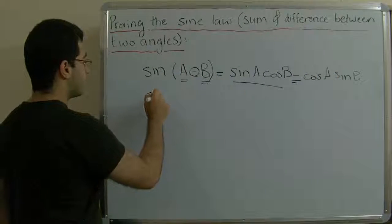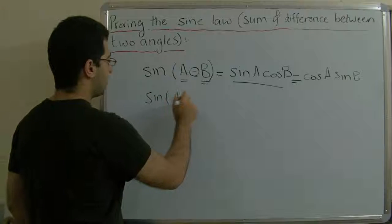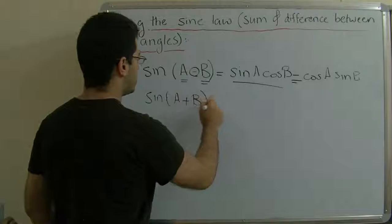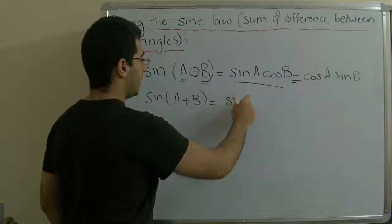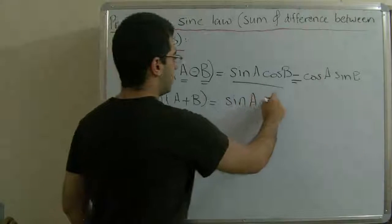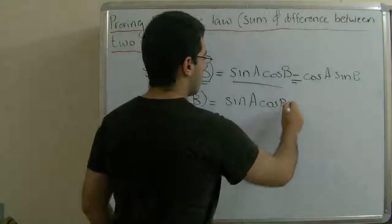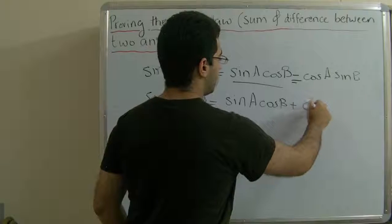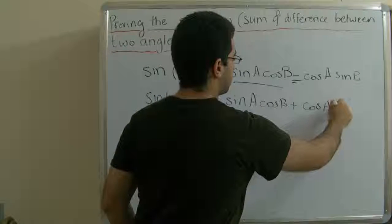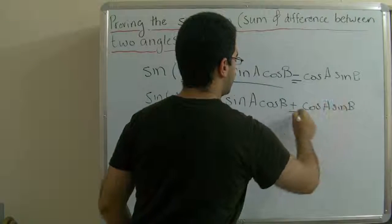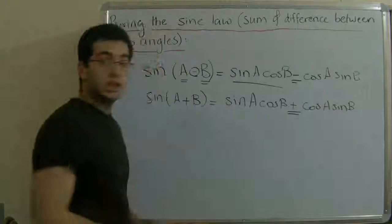If we have sine of the sum of two angles, it's the same structure: sine a cosine b, positive cosine a sine b, and the sign also doesn't change.